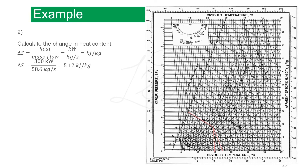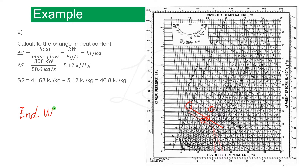From the psychrometric chart, sigma heat of 46.8 is located here, so we draw a red line. The intersection between the red line and the wet bulb temperature scale can be read off — here is 15, here is 20 — so the ending wet bulb temperature is 16.7 degrees.